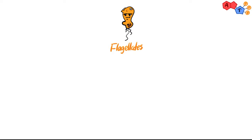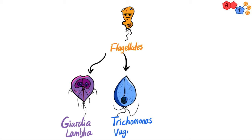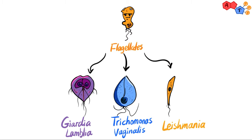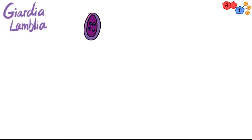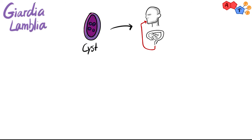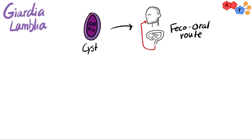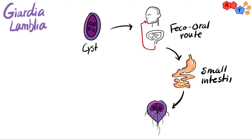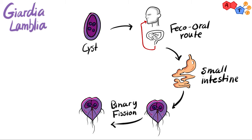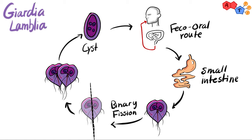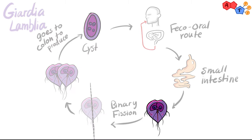Moving on to flagellates, there are three major types: Giardia lamblia, Trichomonas vaginalis, and Leishmania. Giardia lamblia's life cycle starts with infection via the fecal-oral route through ingestion of contaminated food or water. They release the trophozoite — which is binucleated — in the small intestine, multiply by binary fission, then trophozoites move to the colon where cyst formation occurs. So Giardia lamblia has two life cycle stages: the trophozoite and the cyst.